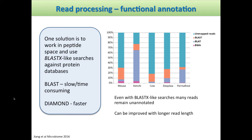One solution to get around all this nucleotide diversity at the strain level is to move into peptide space and use BLASTX-like searches against protein databases. We've been using BLAST, but it's slow and time consuming. Fortunately, now we have Diamond, which does pretty much a similar job. When we did benchmarking, around 95% of the hits we got in Diamond were exactly the same as BLAST, but it's much, much faster — I think around 40 to 100 times faster than BLAST.